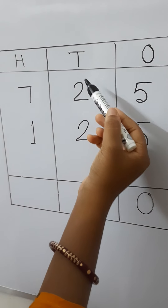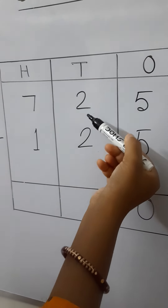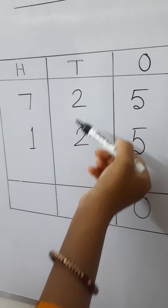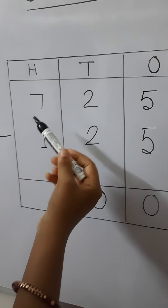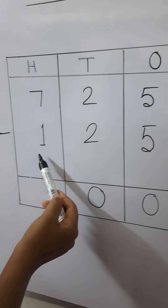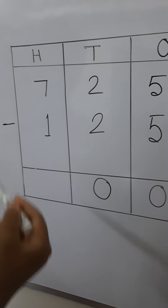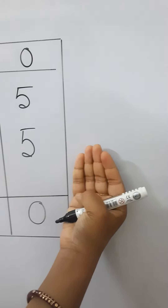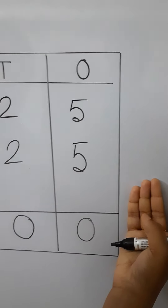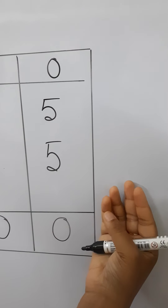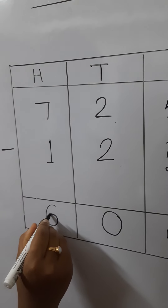Next, the tens place: the first number is 2 and the next number is also 2. When we subtract the same number we get 0. Next, the hundreds place: we have 7 and 1. Counting up from 1 to 7, we get 6. So the hundreds place answer is 6.